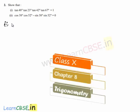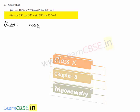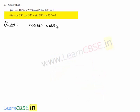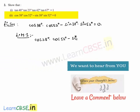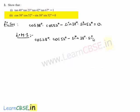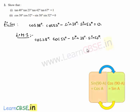Moving on to the second bit of the second problem. We are asked to prove that cos 38° × cos 52° − sin 38° × sin 52° = 0. Consider the left-hand side: cos 38° × cos 52° − sin 38° × sin 52°. Here one term is in terms of cos and the other in terms of sin. Let us convert the whole expression into terms of sine using cos(90° − a) = sin a and sin(90° − a) = cos a.